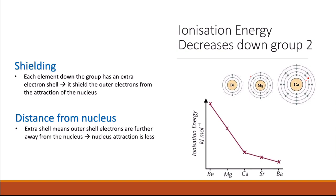The second factor is the distance from the nucleus. Because there is an extra shell, the outer shell electrons are further away from the positively charged nucleus. So the nuclear attraction is less as you go down the group, meaning the outer shell electrons will be easier to remove, and the ionization energy will decrease.